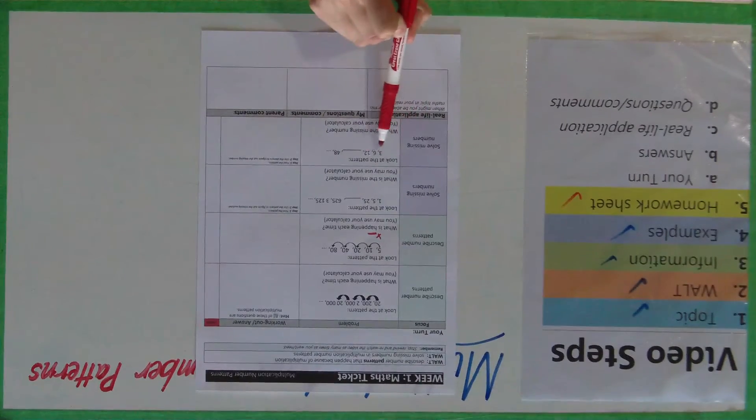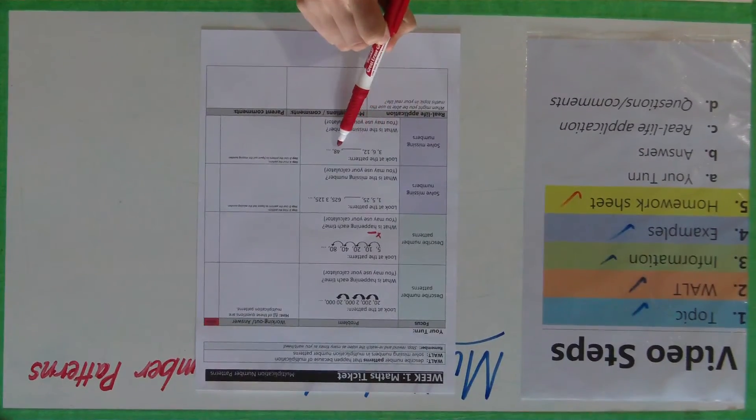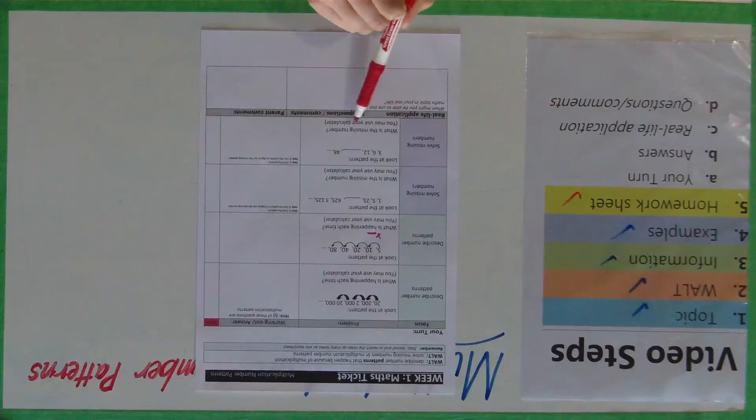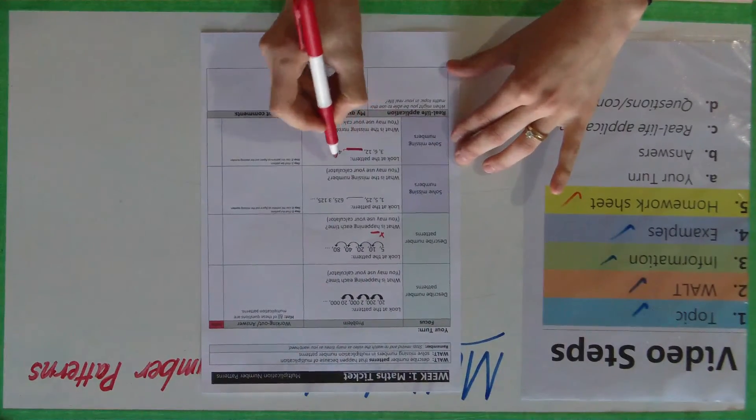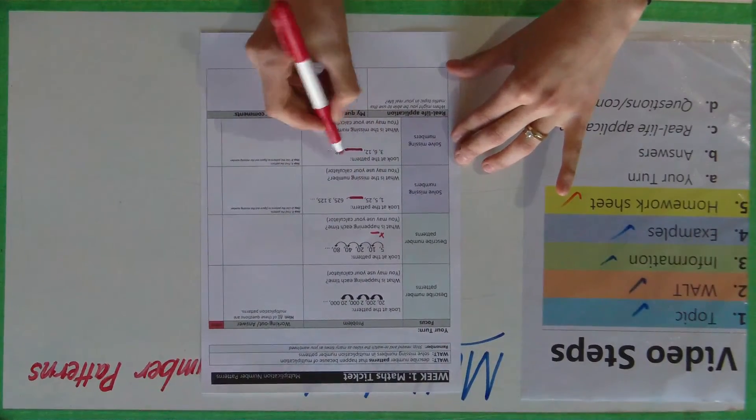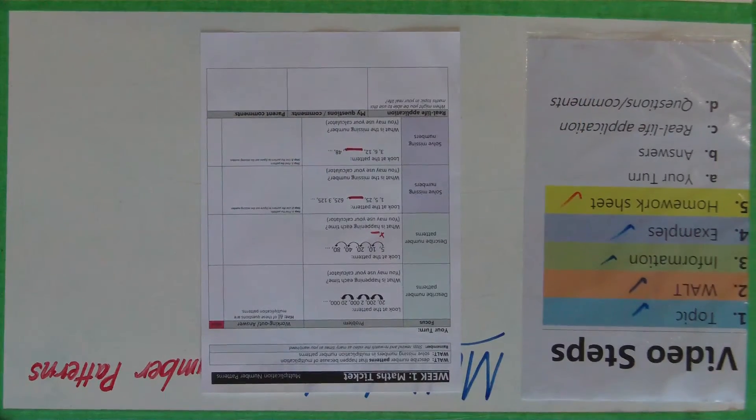And the last one, look at the pattern 3, 6, 12, something, 48, and so on. What is the missing number? You may use your calculator as well for that one. So please have a go, pause the video now, and you will get the answers very shortly.